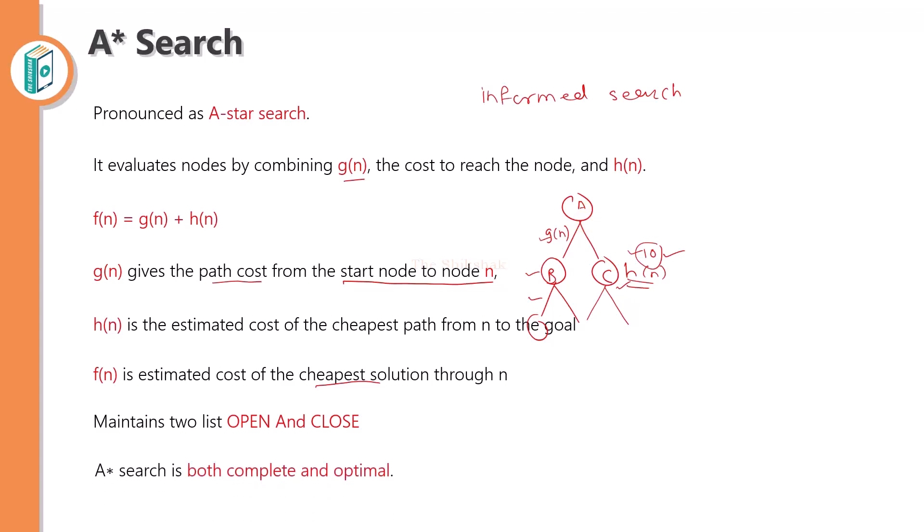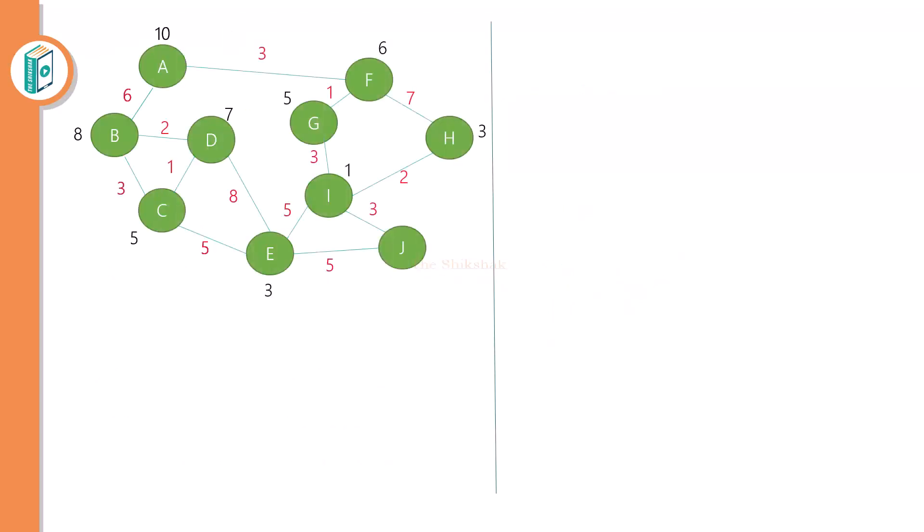The A* algorithm is known as complete and optimal. At any cost, this algorithm will give you the proper solution, and that is why it is known as complete. It will also give you the optimal solution. So let's apply this algorithm.